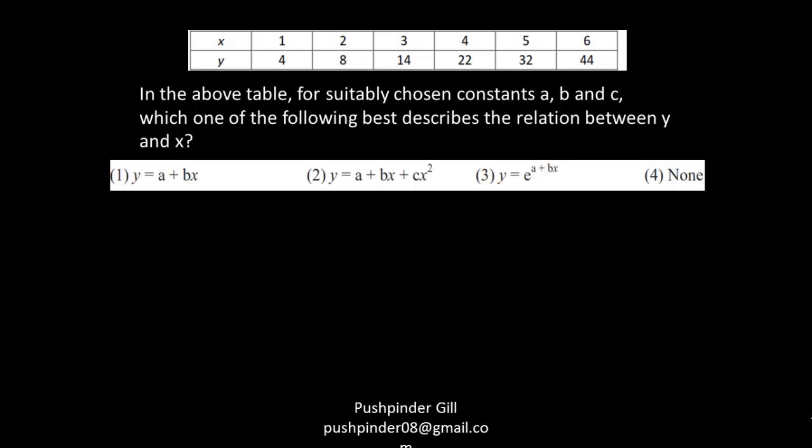So this is the question here. In the table above, these are the values for x and these are the values for y and these are the options given to you. Then it says there are three constants and which of the following best describes the relationship between y and x.